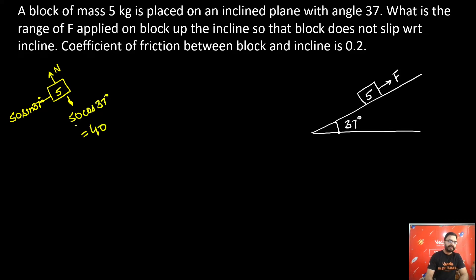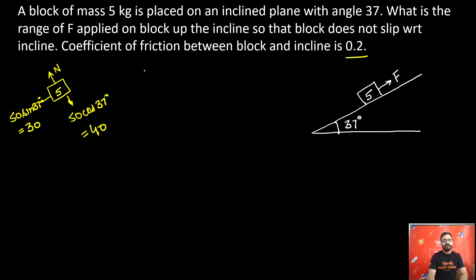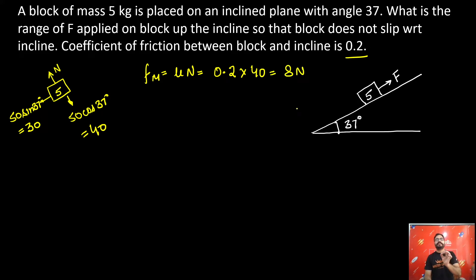mg cos 37 becomes 40 N and mg sin 37 is 30 N. The coefficient of friction is given as 0.2. The maximum value of friction possible is mu times normal — that is 0.2 times 40 — which comes out as 8 newtons. So the maximum value of friction possible is 8 newtons.